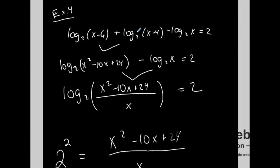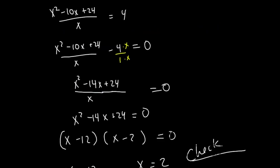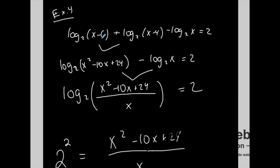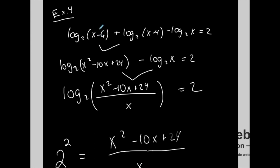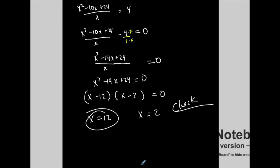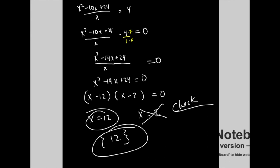Since this came from a logarithmic equation, I need to check both solutions. Checking x equals 12: plugging into all three log arguments gives positive values — no problem, so 12 is a solution. Checking x equals 2: 2 minus 6 is negative — I can't have a negative next to a log, so 2 is not a solution. It's an extraneous solution — it works algebraically but fails the domain check. My solution set contains only 12. Sometimes you get one valid solution, sometimes both, sometimes neither.